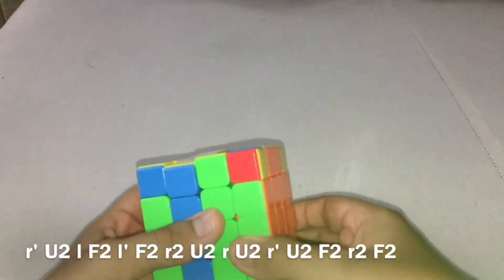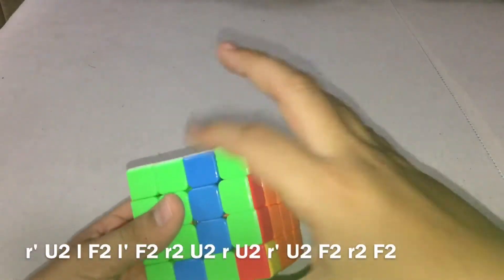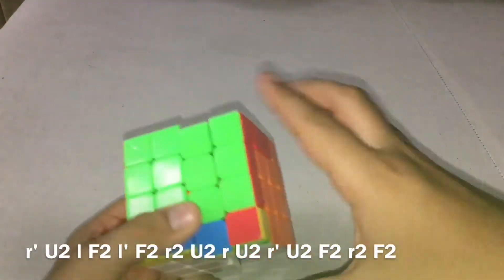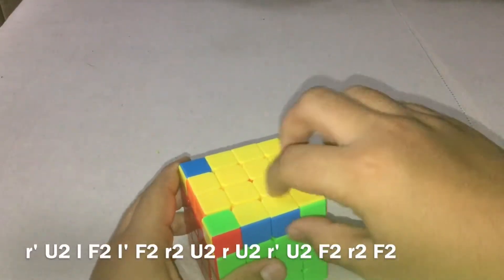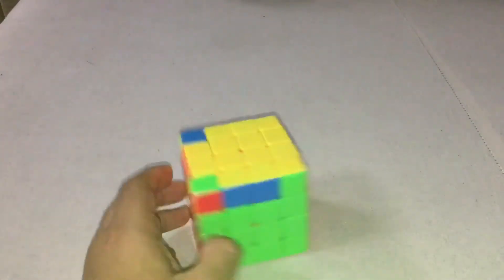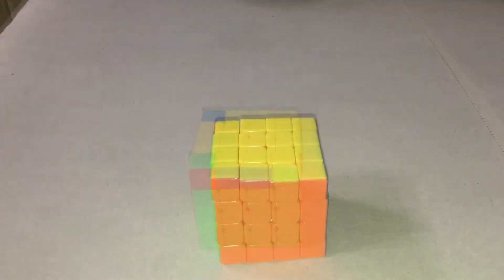R prime, slice that down, U2, then F2, R2, and then F2, and that edge will be completely flipped. And that's how you solve the OLL parity. Let's move on to the PLL parity.